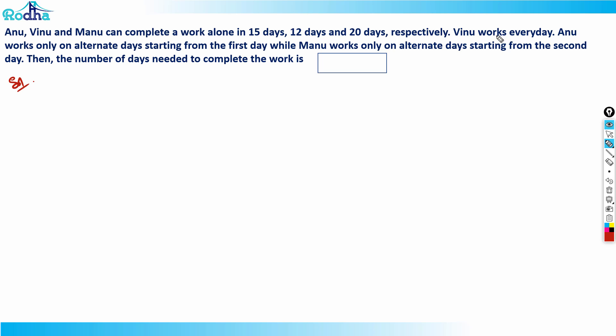Vinu works every day. Anu works on only alternate days starting from the first day, while Manu works on alternate days starting from the second day. Then the number of days needed to complete the work is?